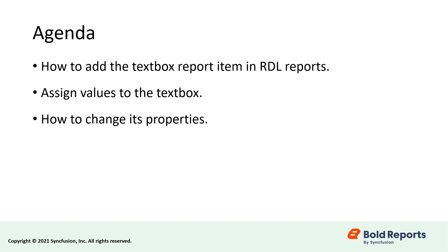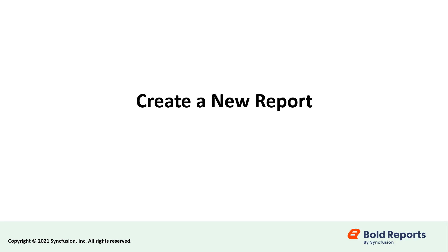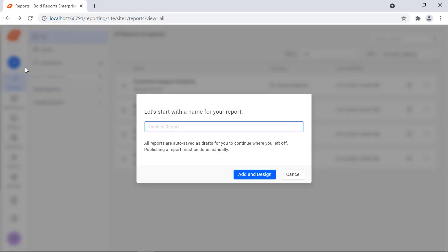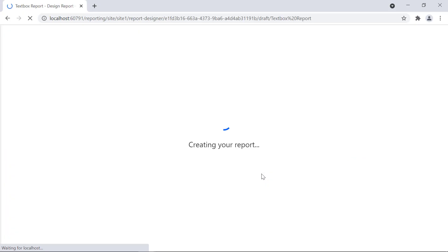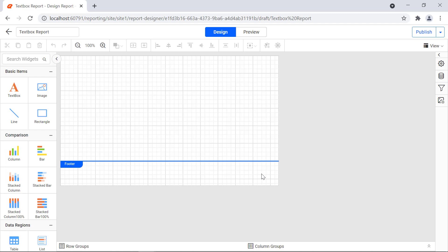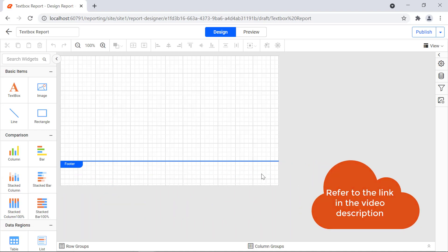In this video, we will see how to add the text box report item in RDL reports, assign values to the text box, and how to change the properties of the text box report item. First, let's create a new report and name it textbox report. You can see how to create your first report in another video — I have provided a link in this video's description for your convenience.